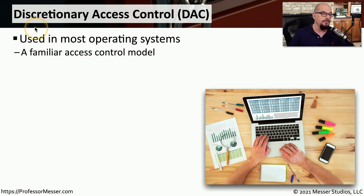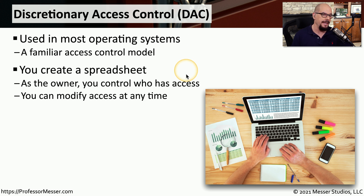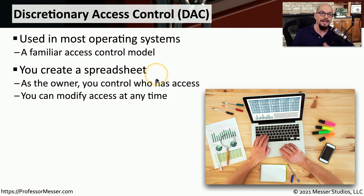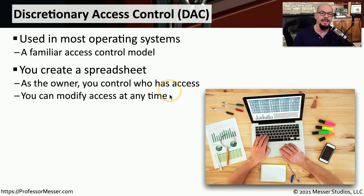If you're a user of Microsoft Windows, then you may be familiar with discretionary access control, or DAC. This means that you create an object and, as the owner of that object, you assign rights and permissions to it. You may create a spreadsheet and decide that an individual or particular group has access to it — allowing them to modify it, or setting read-only access for one group while allowing another group to make changes.